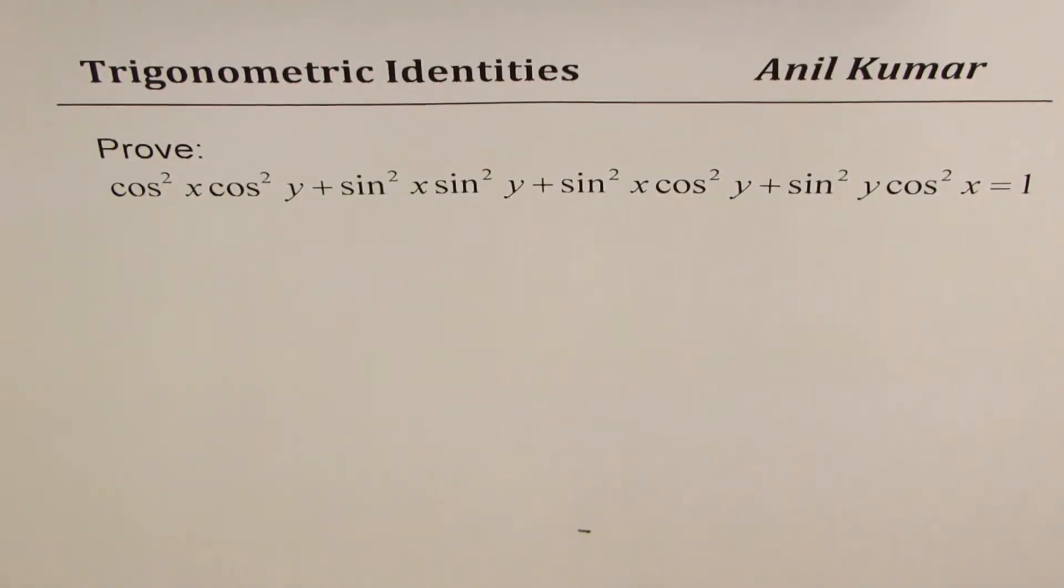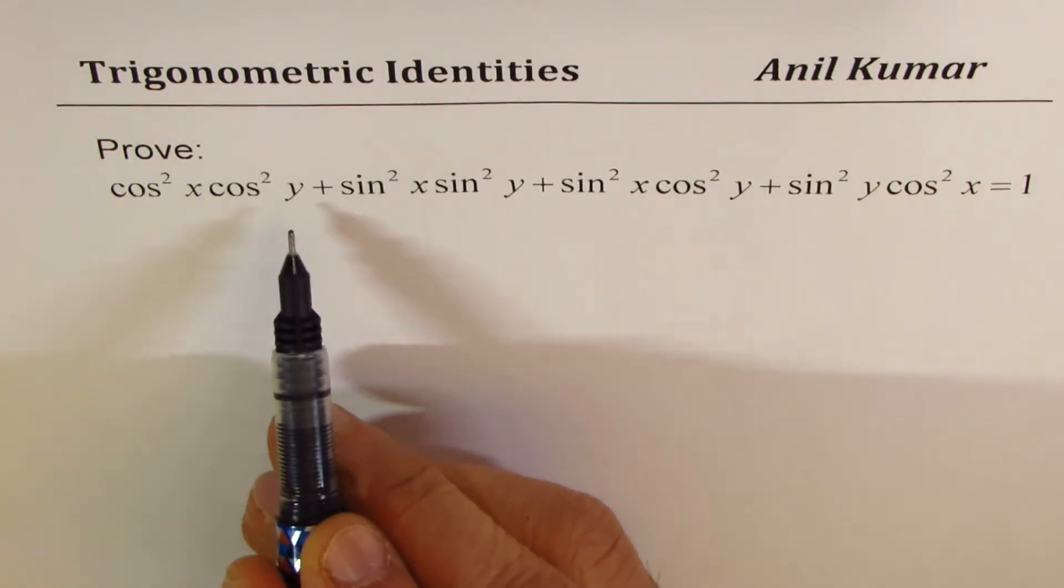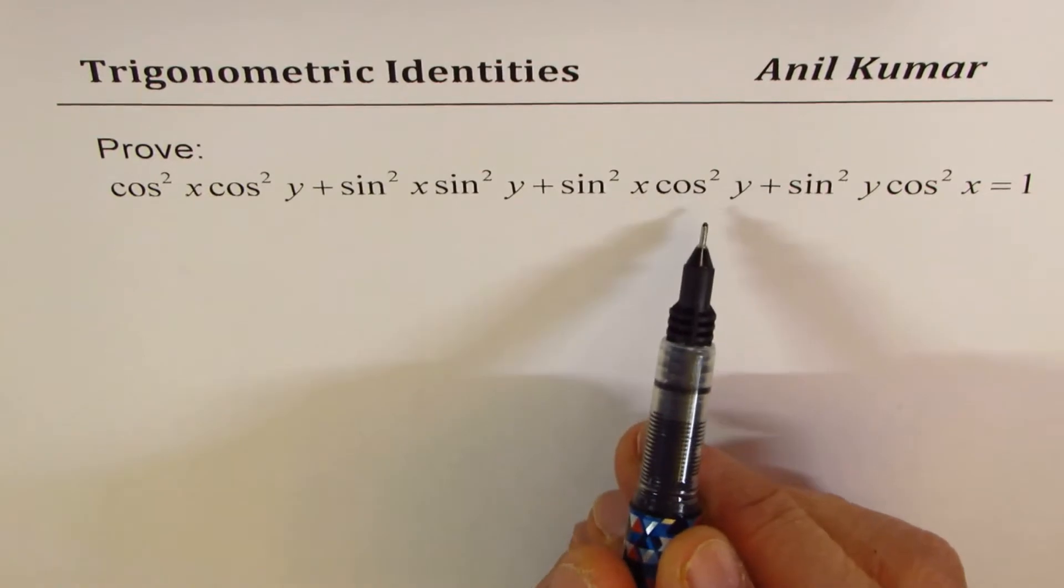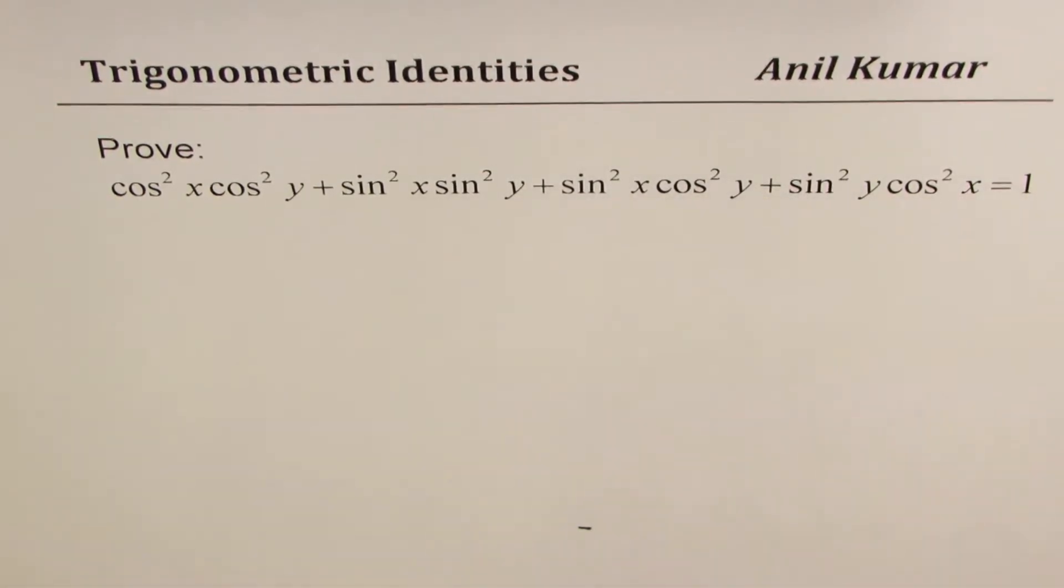I'm Anil Kumar. In this video, we'll prove trigonometric identity cos²x cos²y + sin²x sin²y + sin²x cos²y + sin²y cos²x = 1.